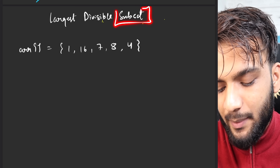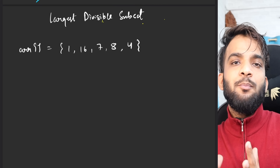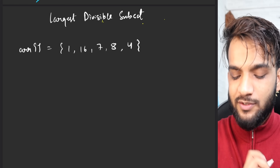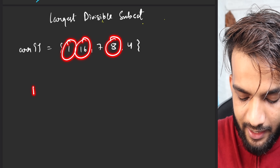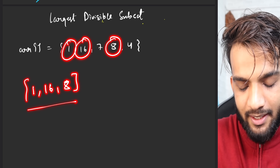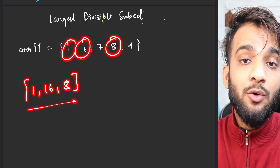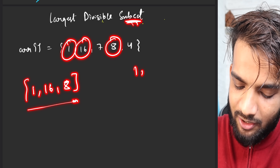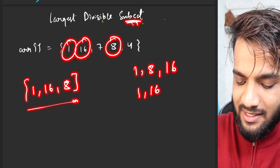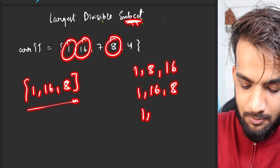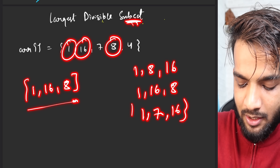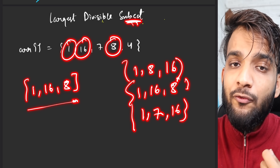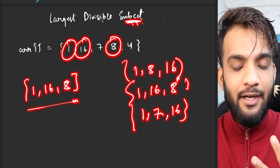Let's first understand the meaning of 'subset'. So far we were doing problems on Longest Increasing Subsequence. In a subsequence, if I pick 1, 16, 8, they have to be in the same order as in the array. But the moment I use the term 'subset', I can write them as 1, 8, 16 or 1, 16, 8 — you generally don't need to follow an order. You can pick any element from the array.